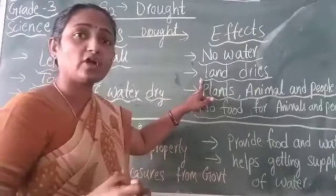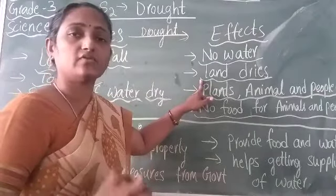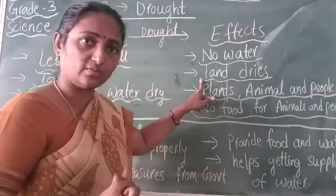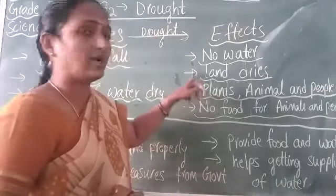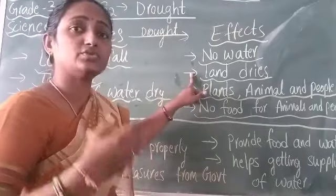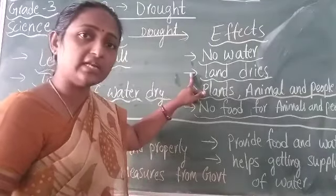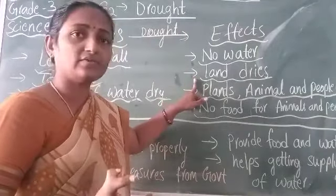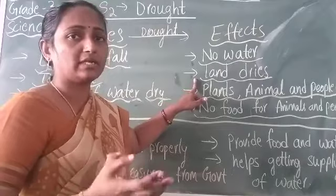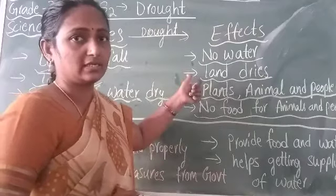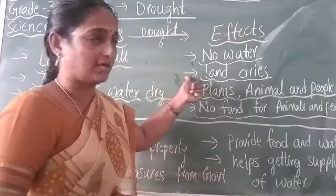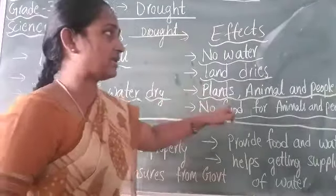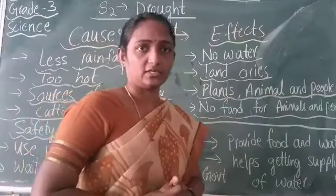When there is proper rainfall, we can see moisture content in the soil. But when there is very less rainfall, the land will be completely seen as drying up. Plants, animals, and people will die.